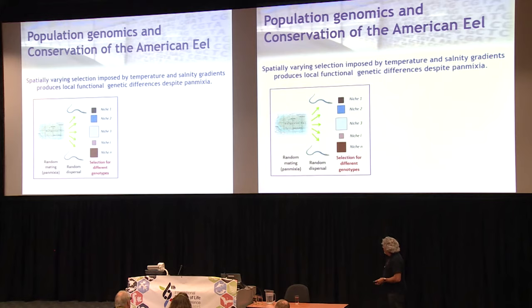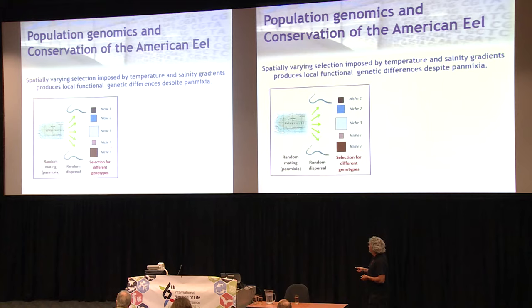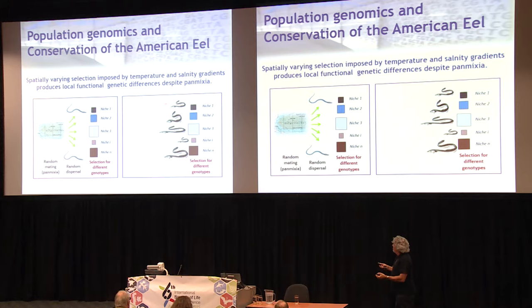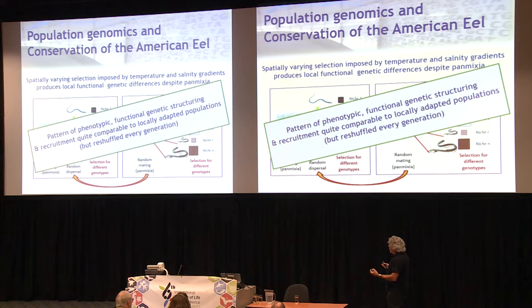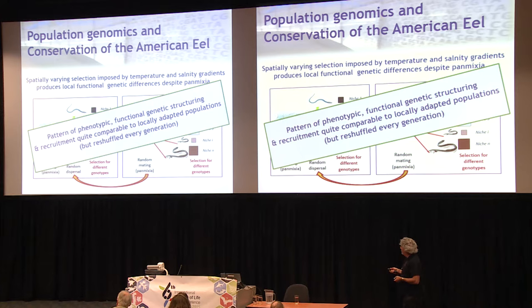How does that work? Basically, you have random mating in the Sargasso Sea, random dispersal of larvae along the coast, and they will occupy different ecological niches related to temperature or salinity. In each of these niches there will be selection for different genotypes during the lifetime of the eel, which may be related to differences in phenotypic variation associated with these different niches. Then there will be migration back to the Sargasso Sea and random mating among these now genetically and phenotypically different eels, and the cycle will start over. Overall, in eel you see a pattern of phenotypic and functional genetic structuring totally comparable to locally adapted populations in other species, but here this is reshuffled every generation.